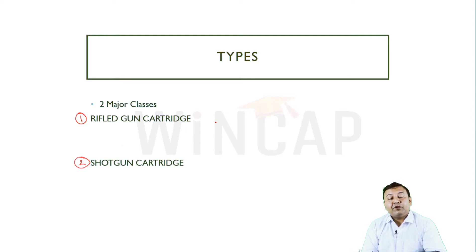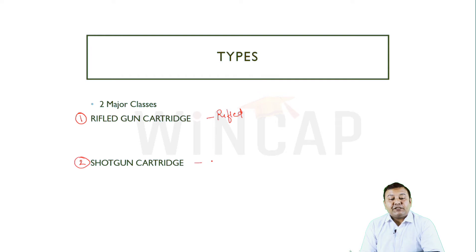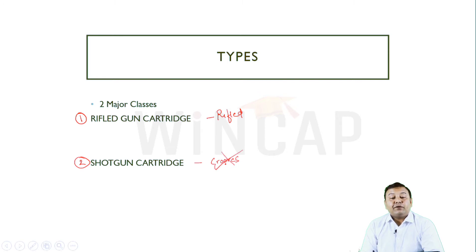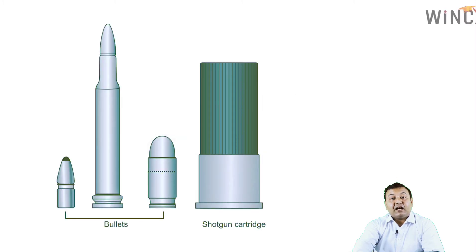There are two very important differences between them. Rifled gun cartridges are always going to be used in rifled weapons — those weapons which have a specific type of barrel. Shotgun cartridges are used in weapons which do not have rifling, grooves, or lands inside the barrel. Where those features don't exist, we use shotgun cartridges. Structurally and in terms of the wounds they cause, rifle and shotgun cartridges are different.